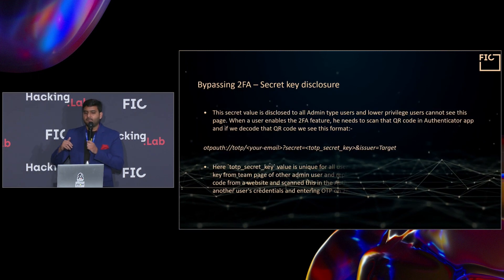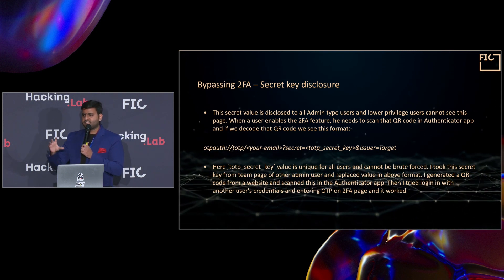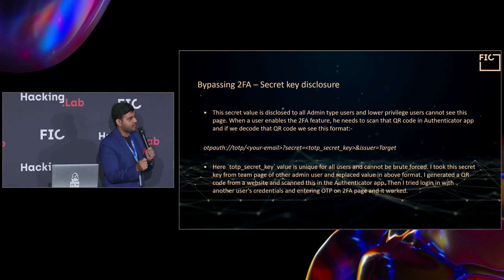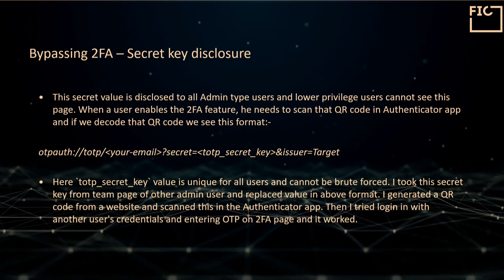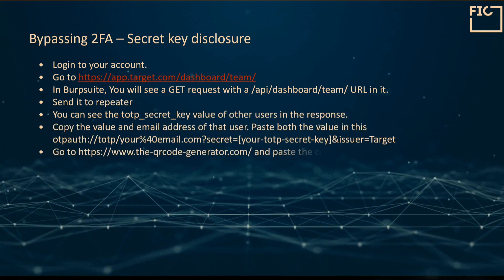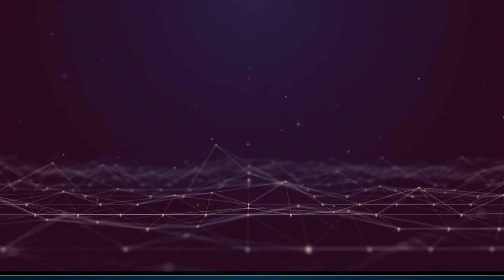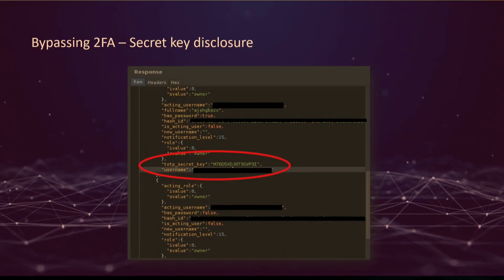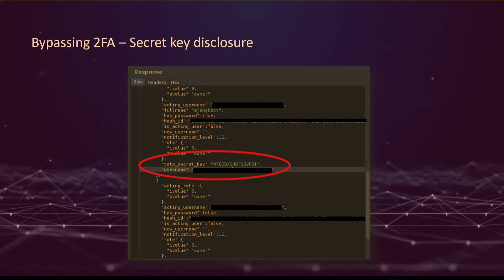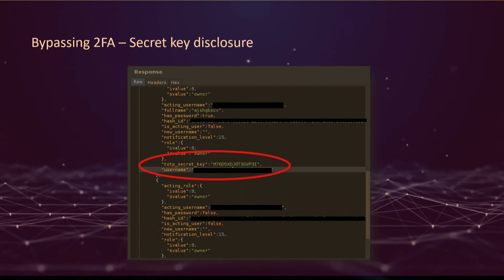We have bypassing 2FA using secret key disclosure. The secret key is what you use when you attach a 2FA device to your account — you scan a QR code to attach that device, and that QR code is essentially the secret key. We were able to find the secret key within the source code of a mobile application. We acquired the secret key, created a QR code using it, scanned the QR code using the victim's account, and connected our own device to that account — totally bypassing 2FA without the victim knowing.